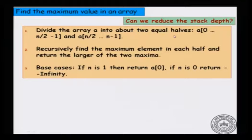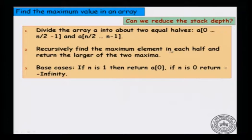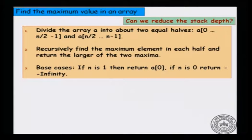Divide the array into about two equal halves: the first half a[0] to a[n/2 - 1] contains n/2 elements, and the second half a[n/2] up to a[n-1] is the right half. Recursively find the maximum element of each half. If x is the maximum in the left half and y is the maximum in the right half, return the larger of x and y. For base cases: when n is 1, the only element is the maximum, so return a[0]; if n is 0, return minus infinity.